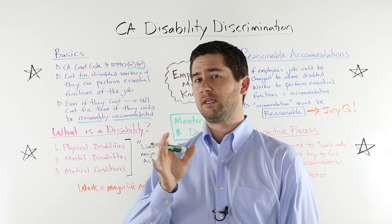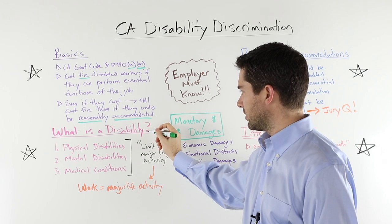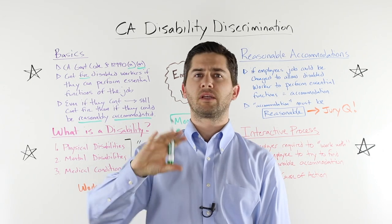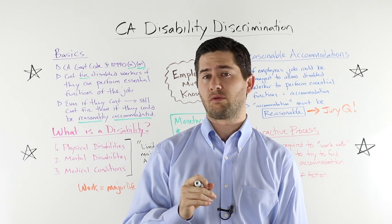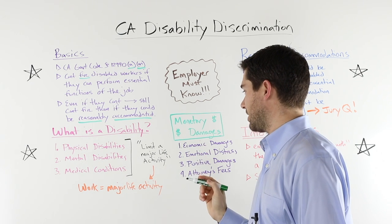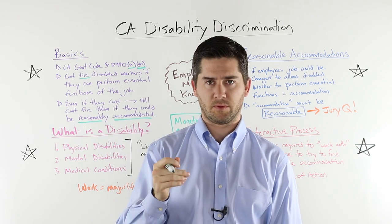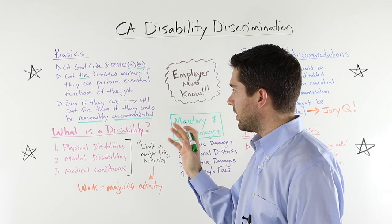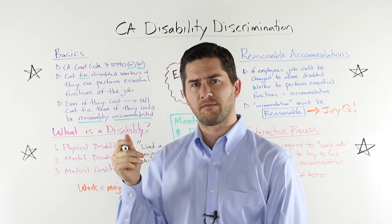Before we unpack those in more detail, we first need to establish what California employment law considers to be a disability. It defines three. Number one, physical disabilities. A physical disability is any physiological disease, disorder, condition, cosmetic disfigurement, or anatomical loss that affects body systems and — this is important — limits a major life activity. That's a fancy lawyer definition, so here are some examples: chronic kidney disease, broken bones, torn ligaments, back problems, heart disease, epilepsy, and polio. Those are all good examples of a physical disability.